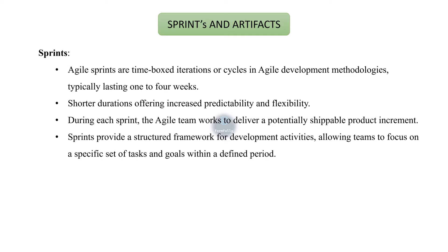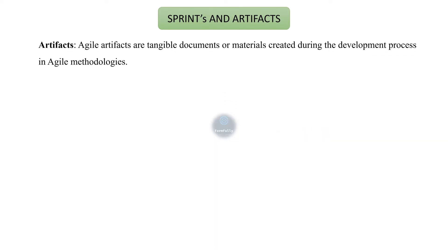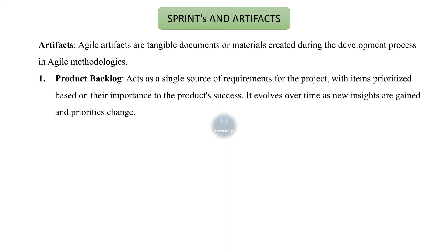Sprints provide a structured framework for development activities, allowing the team to focus on a specific set of tasks and goals within a defined period. Agile artifacts are tangible documents or materials created during the development process. The three main artifacts are the product backlog, sprint backlog, and sprint burndown chart. The product backlog acts as a single source of requirements for the project, with items prioritized based on their importance to the product's success. It evolves over time as new insights are gained and priorities change.